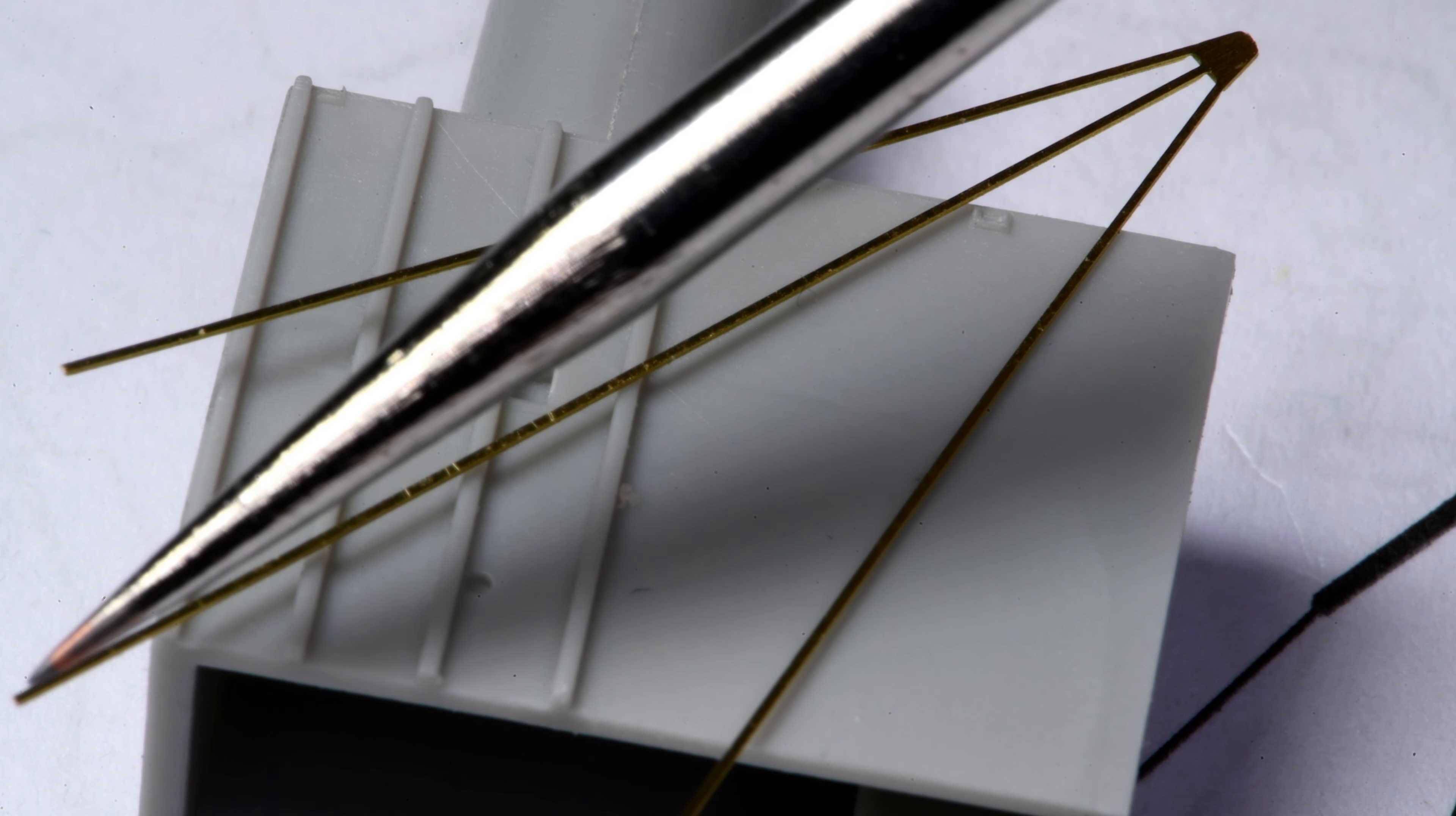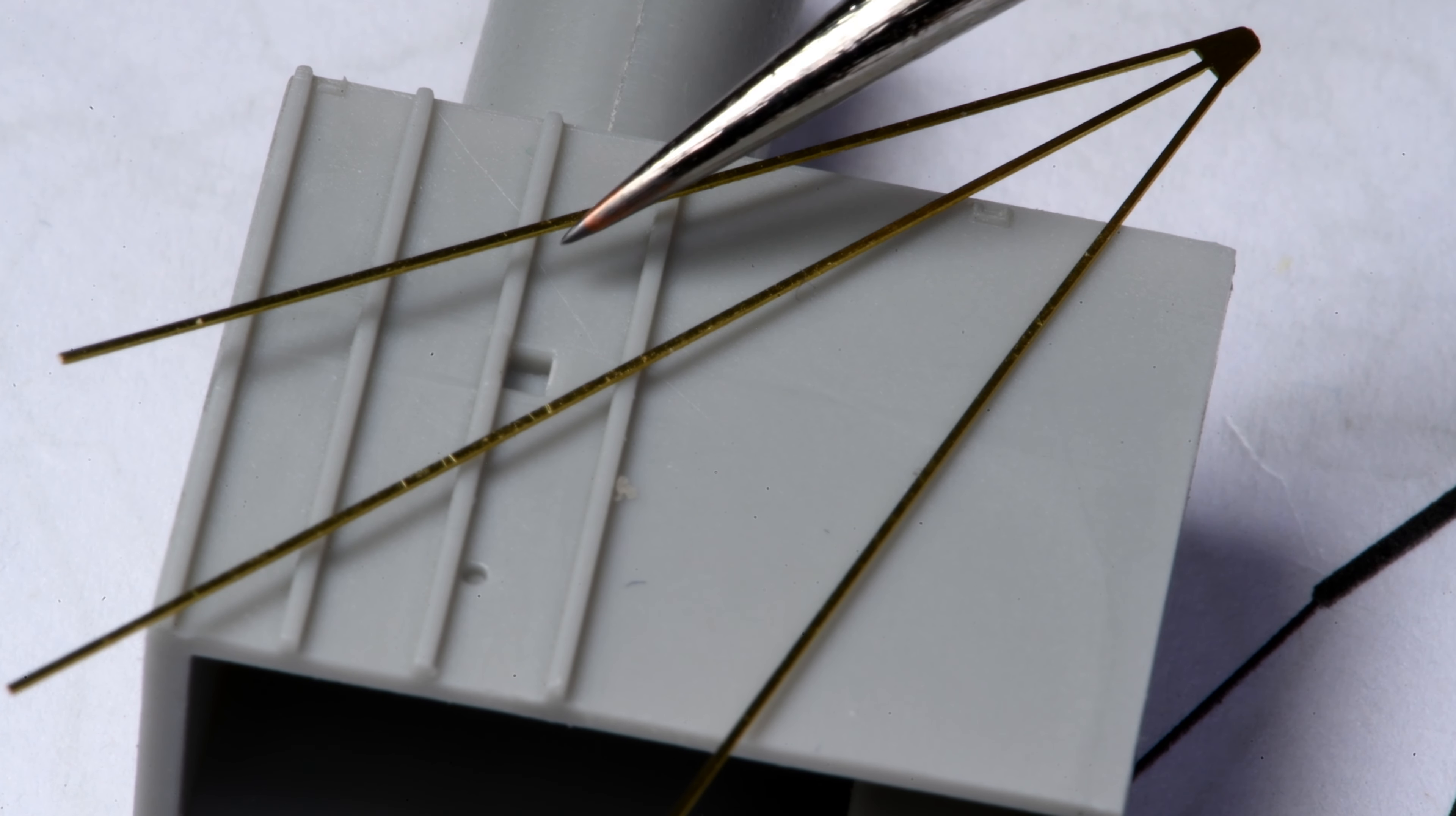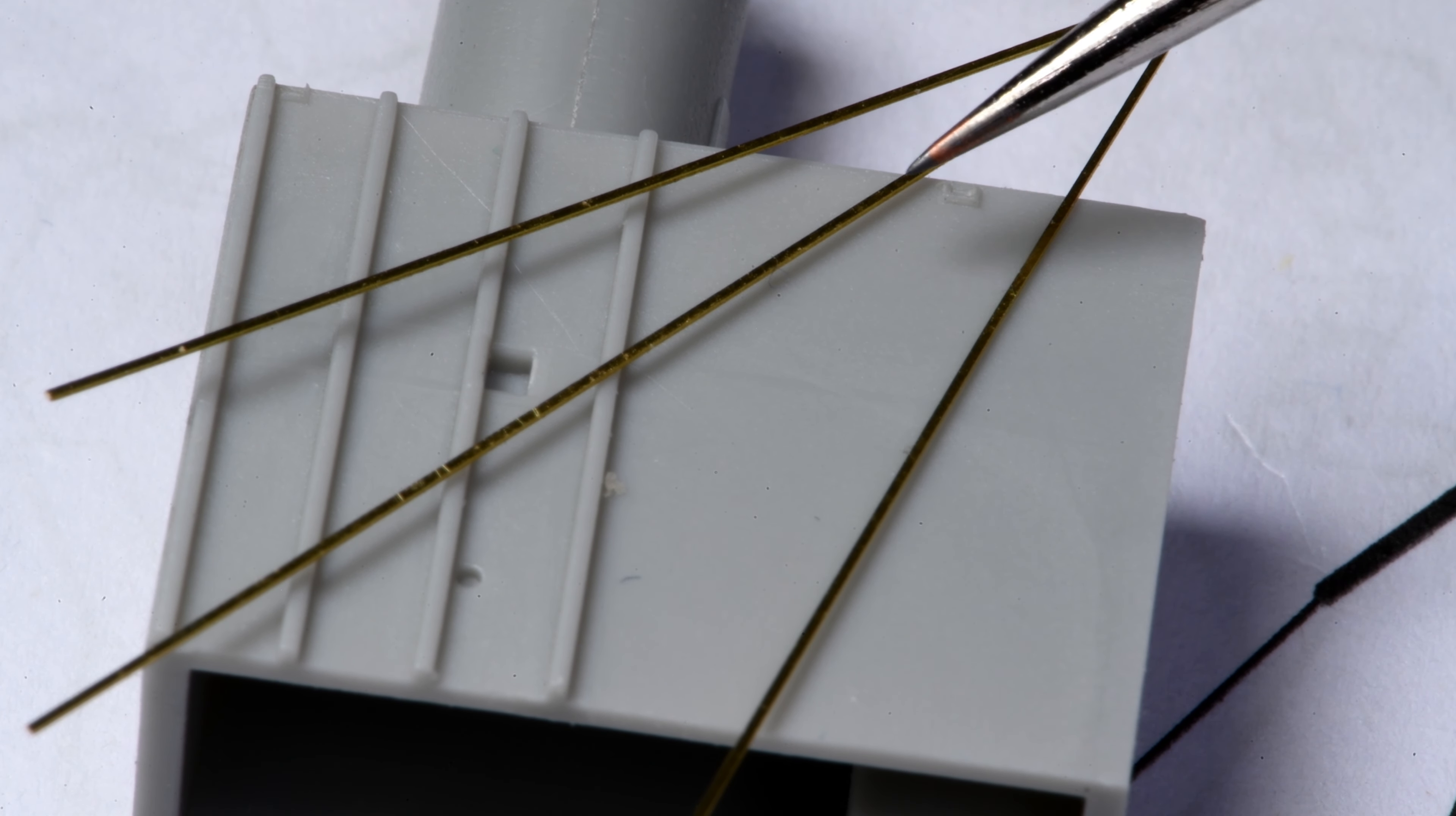So this one here goes right there. This one here then would go in that little place right there. Remember I said we have to be careful not to scrape that off when I was getting rid of the flashing along the top there. I thought maybe it was supposed to represent a light, but no, that is supposed to be a place where the end of the photo etch goes.